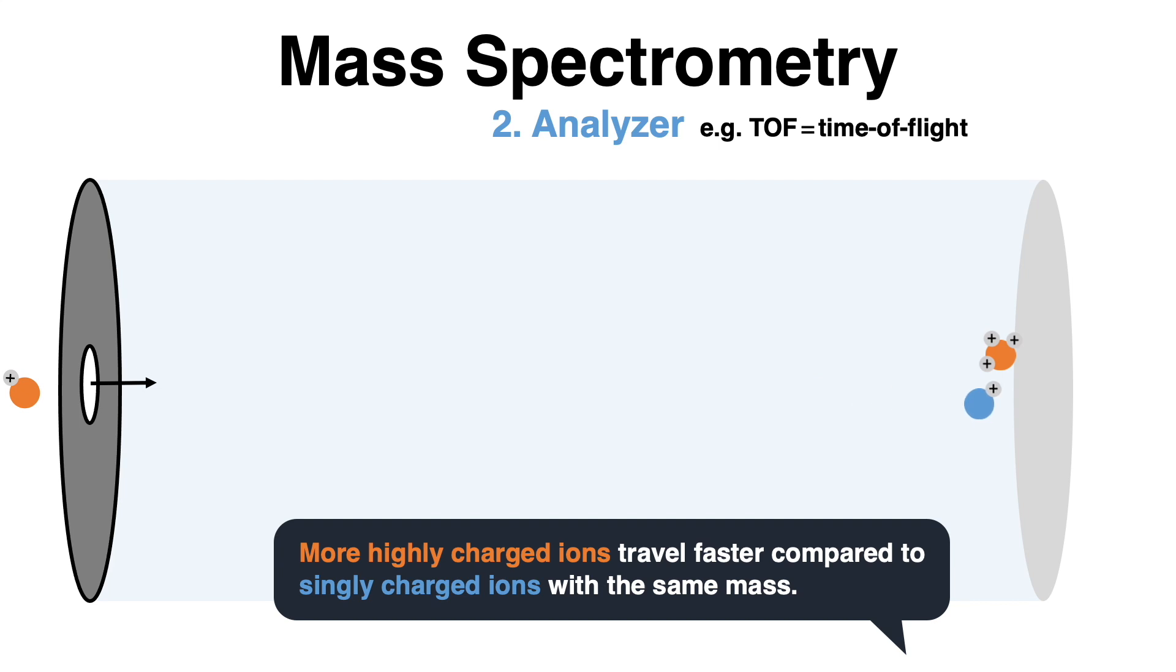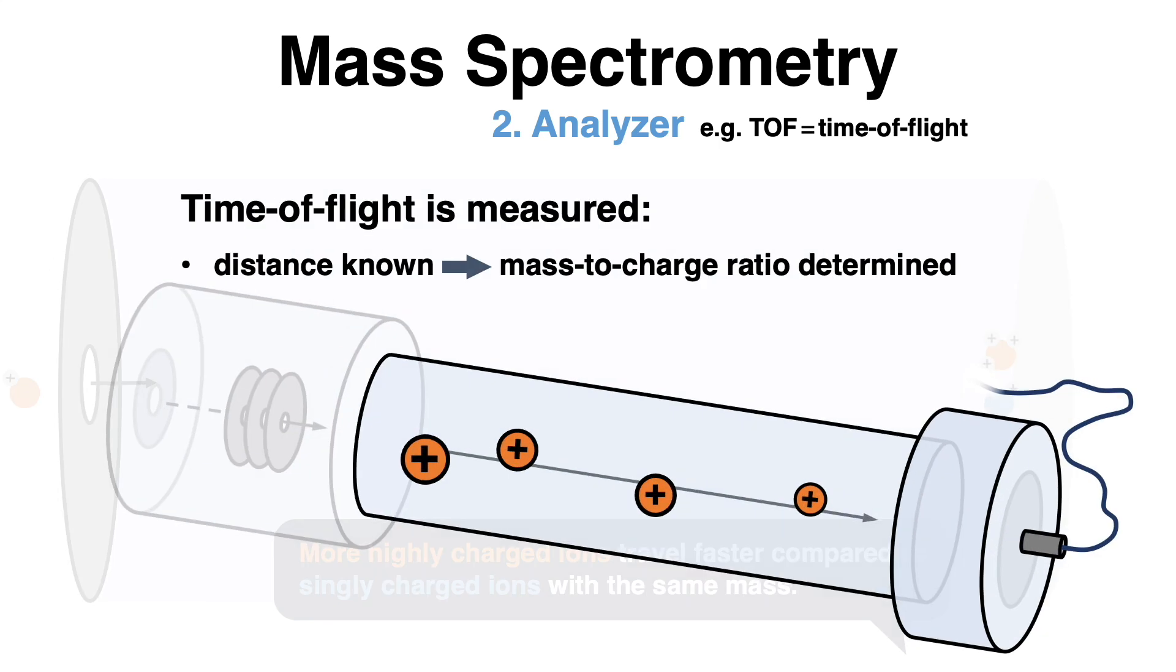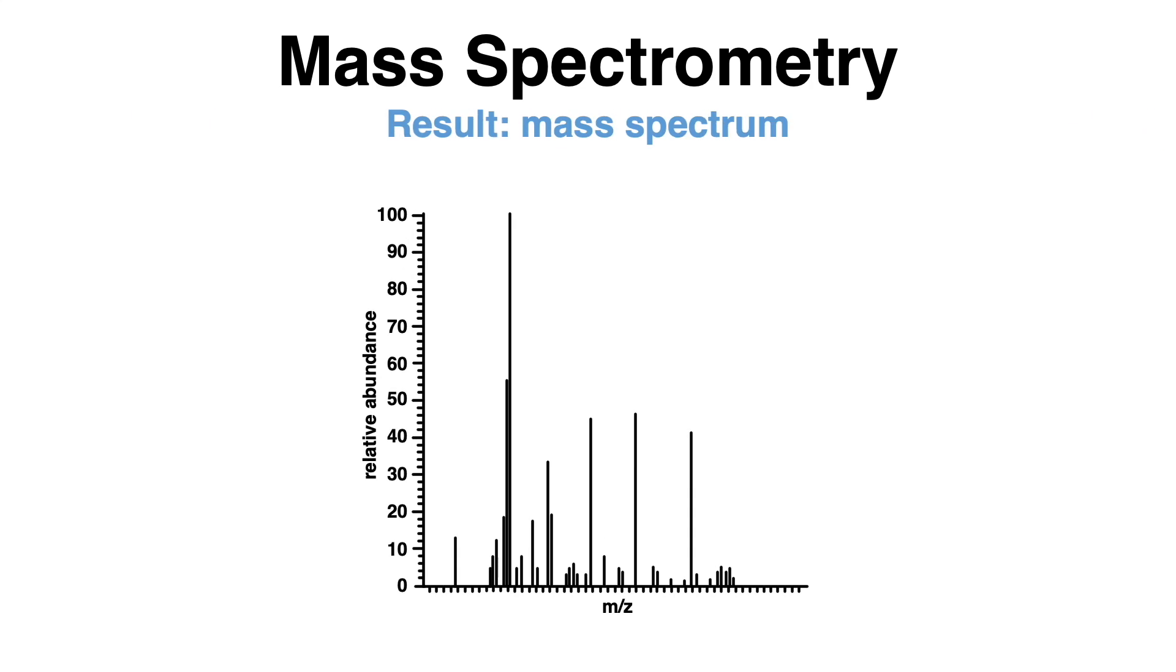The time of flight through the tube to the detector is then measured. Since the distance is known, the mass-to-charge ratio can be determined. The ions are also quantified, and the mass spec result will be featured as a chart looking like this, which is referred to as a mass spectrum.